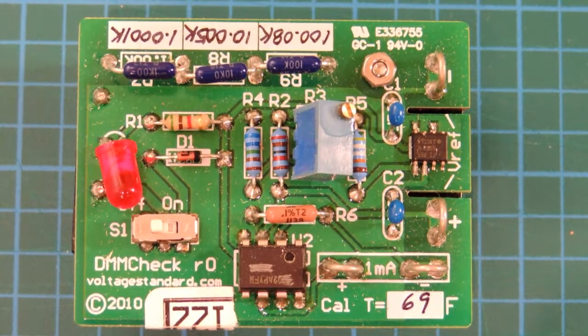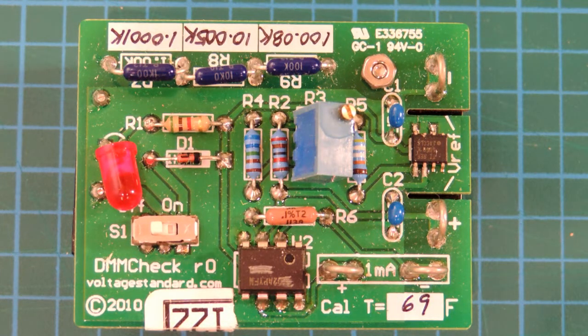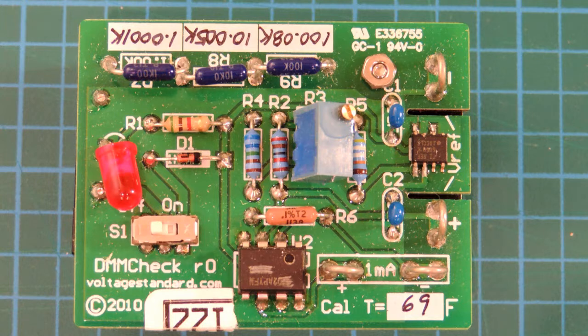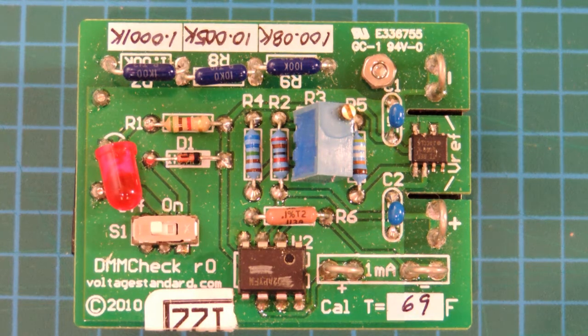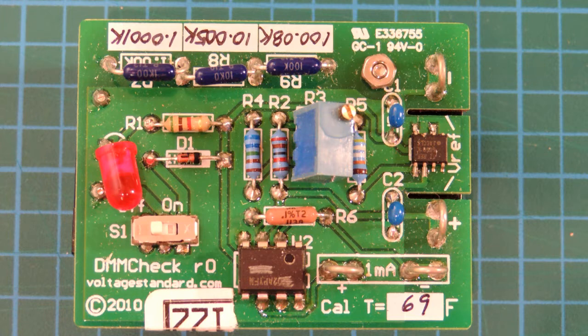Anytime you buy a meter you need to make sure it's accurate before you put it into service in your workshop. By far and away, this is probably the most popular reference standard out there, at least when you look at YouTube videos. And there's a good reason for that. It's called the DMM check. You can actually, if you zoom in there, you can read the URL and buy one for yourself in your own workshop. They're really inexpensive, about $40.